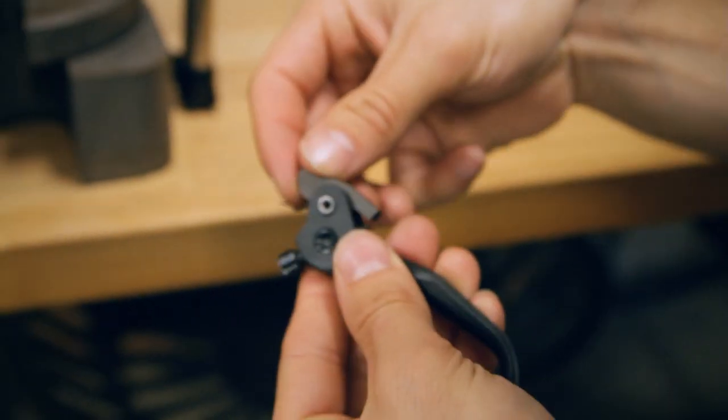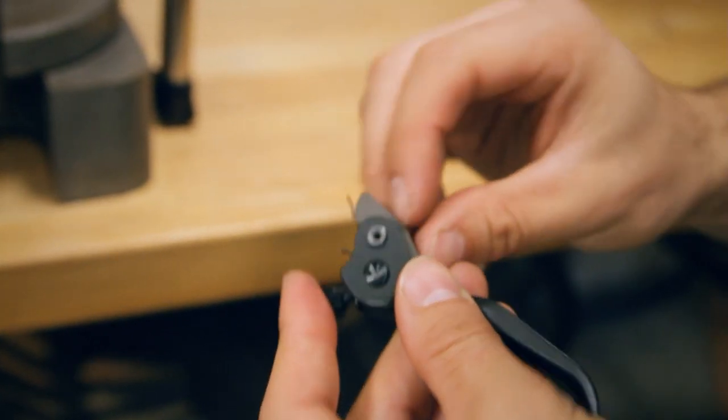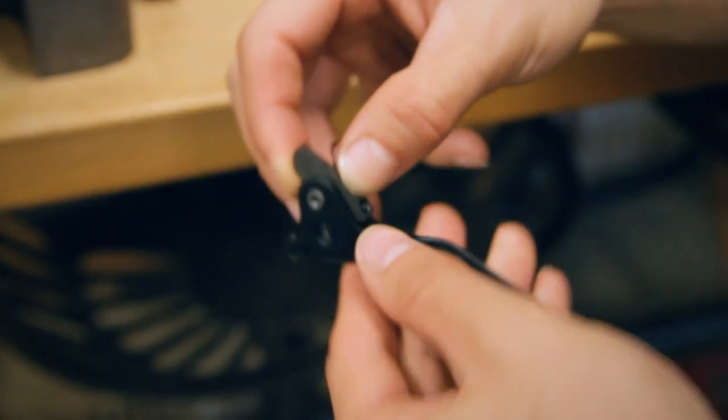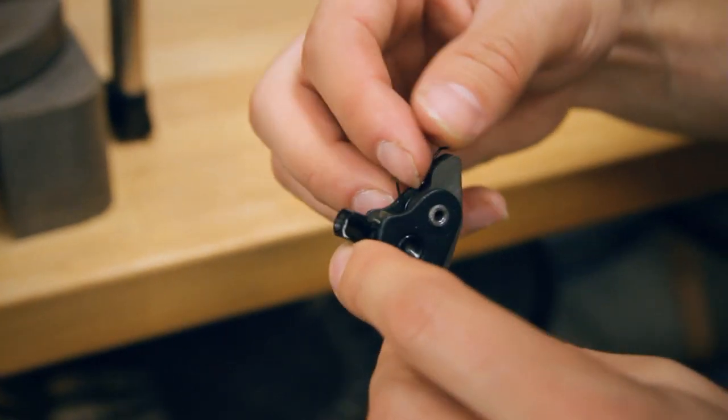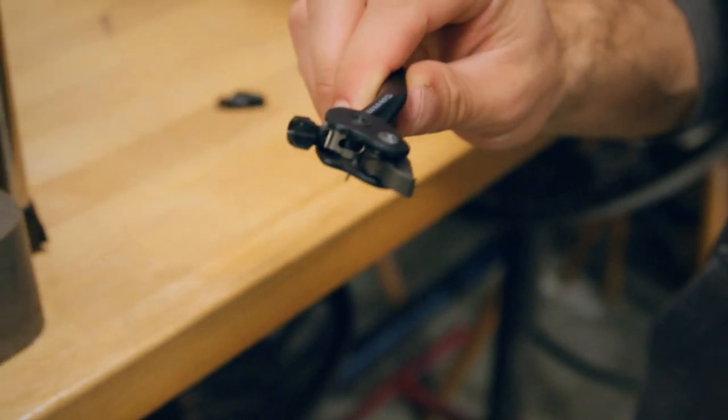So there you go. Should swing freely. The reach adjust drops in through that little hole. Spring is in the correct location. Now you're good to install it on your bike.